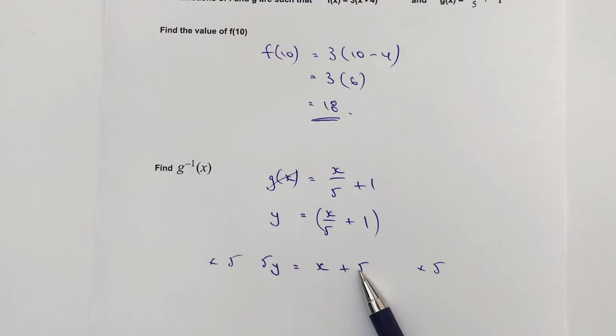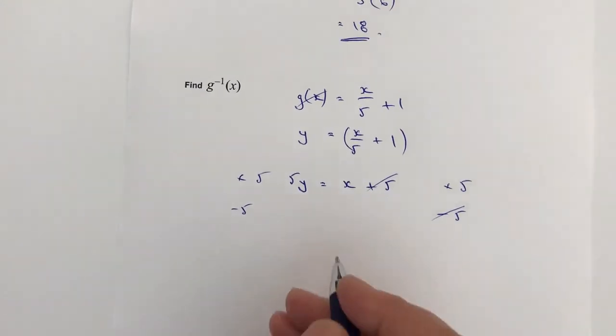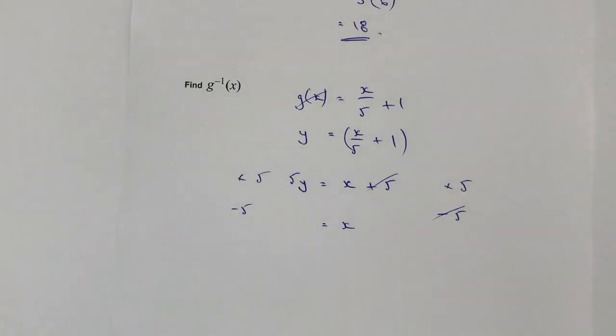So if I'm minus 5 on this side, these two cancel themselves out and I end up with x on its own, which is exactly what I want on the left hand side. However, I end up with 5y minus 5.